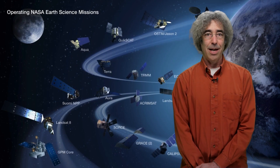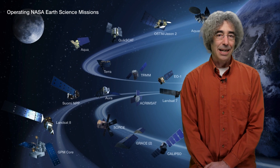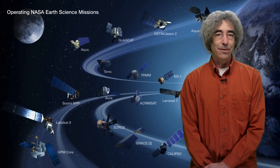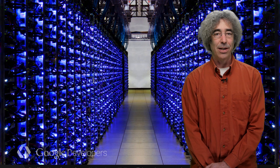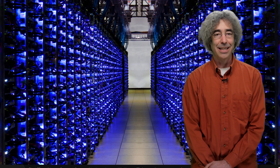Satellites have been collecting Earth observation data for decades, but it's been difficult to get access to that information. And there's so much data that even if you could access it, it's very difficult to analyze. At Google, we've decided to overcome these difficulties by downloading petabytes of satellite data, putting them on spinning disks in our data centers, and providing tools and an API for analyzing the data quickly and easily.